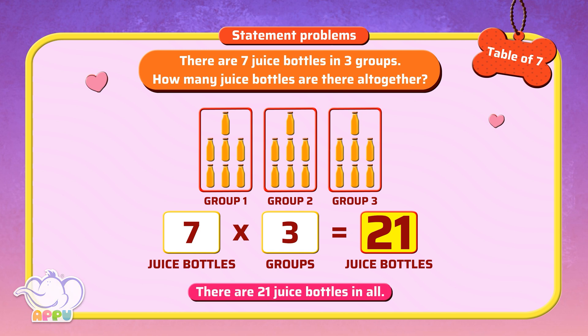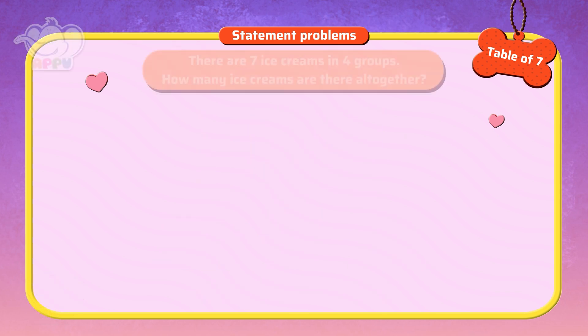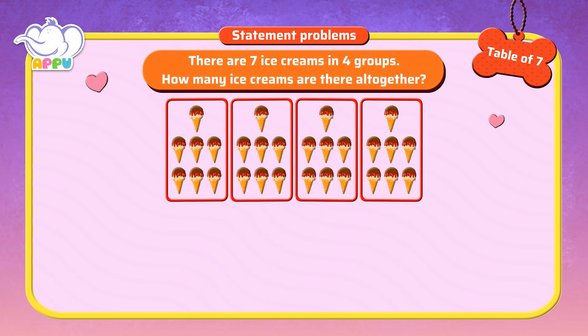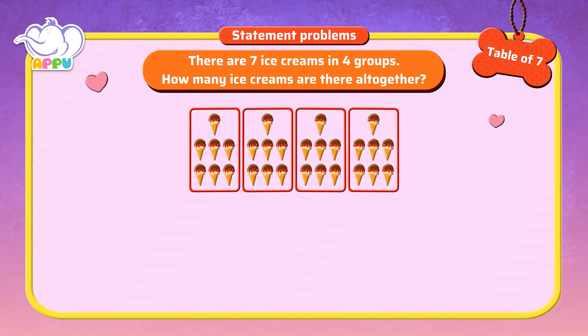Great! There are 7 ice creams in 4 groups. How many ice creams are there all together? To find the total number of ice creams, we multiply. 7 times 4 equals...